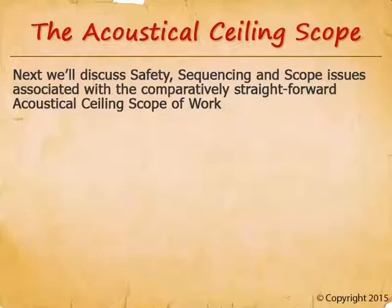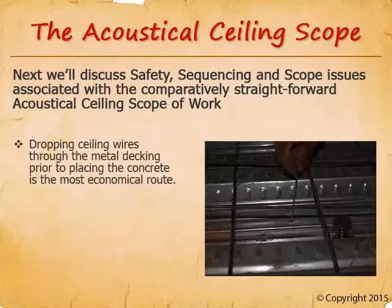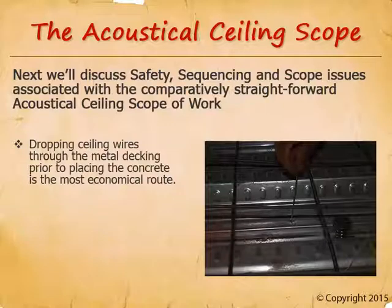Acoustical ceiling sealing wires are most economically installed by dropping them through metal decking before concrete is placed, but this creates a grid of dangling pointed wires that presents a safety hazard and gets in the way of MEP work. MEP subs will cut the wires but won't replace them or pay for replacement. Drilling or shooting sealing wires into the bottom of the concrete deck immediately prior to grid installation is safer, though more expensive, and keeps wires out of the way of other trades.